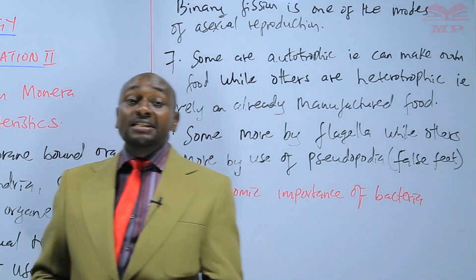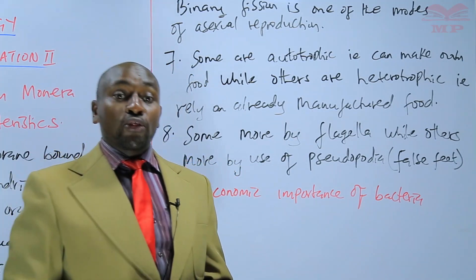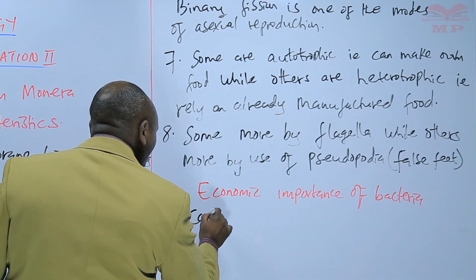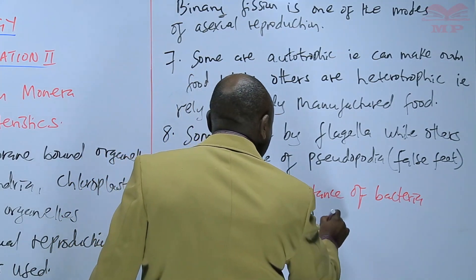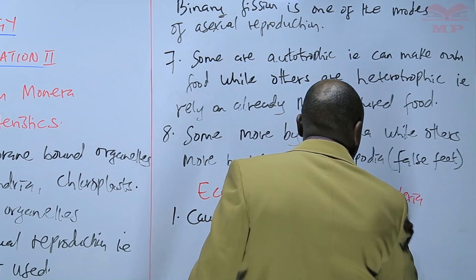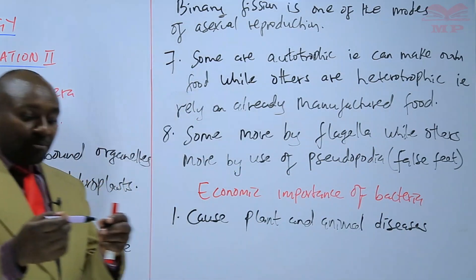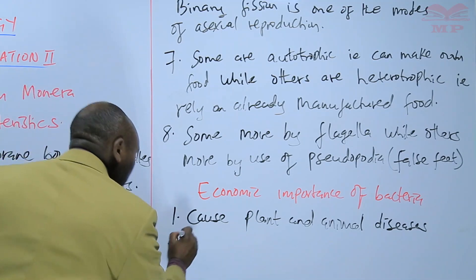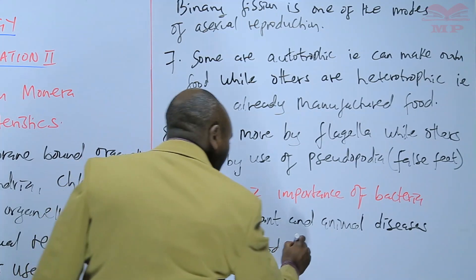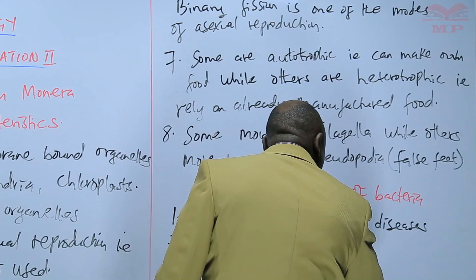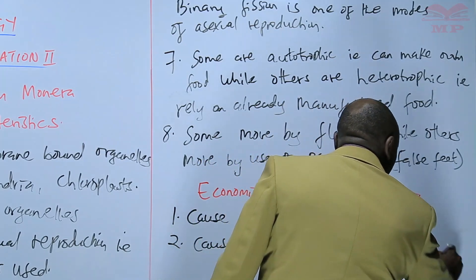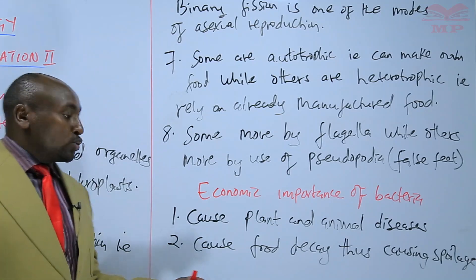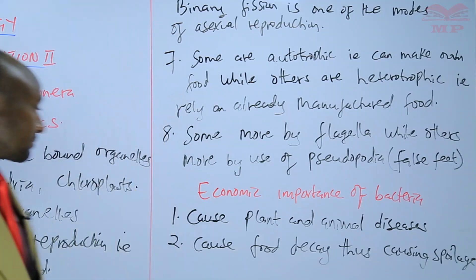Number one, we know that bacteria cause diseases. Those diseases affect both humans and animals, and also affect even plants. So they cause plant and animal diseases. We mentioned diseases such as cholera, typhoid, and so on. Number two, bacteria also cause food decay, making food spoil. You cannot store food for a very long time because it will decay, and that decay is attributed to bacteria.